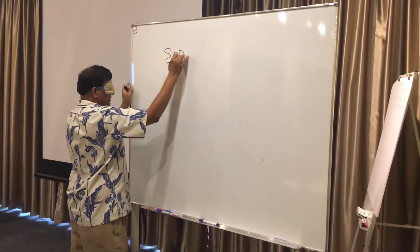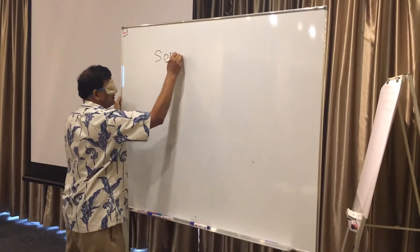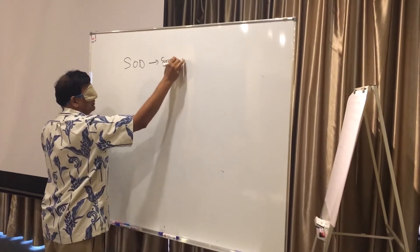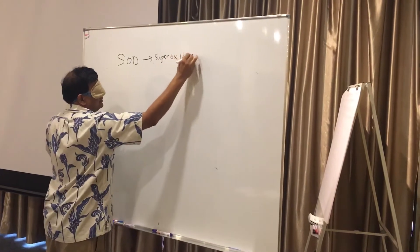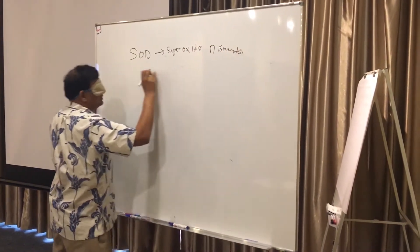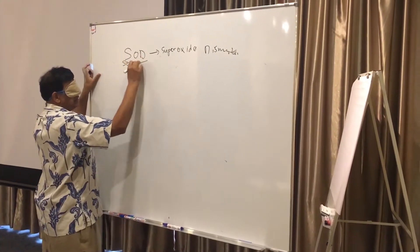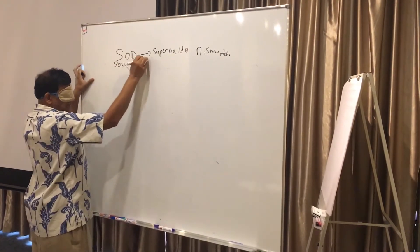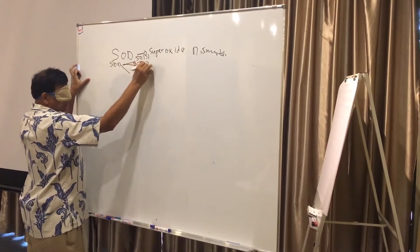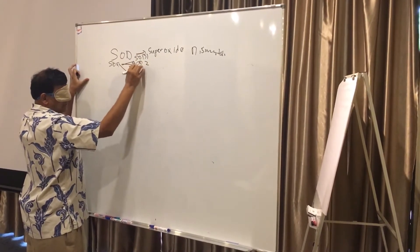SOD is superoxide dismutase. SOD is divided into three components: SOD1, SOD2, SOD3.